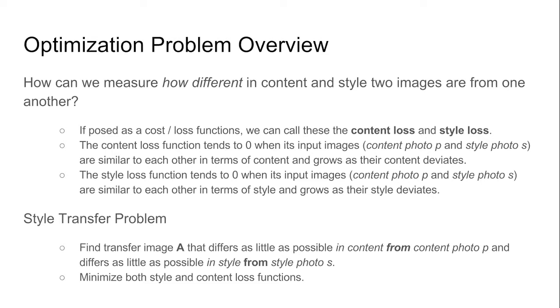The style loss function tends to zero when its input images, content photo P and style photo S, are similar to each other in terms of style and grows as their style deviates. Therefore, we can state the style transfer problem as find transfer image A that differs as little as possible in content from content photo P and differs as little as possible in style from style photo S. What we want to do is minimize both the style and content loss functions. We now understand why style transfer can be described as an optimization problem.